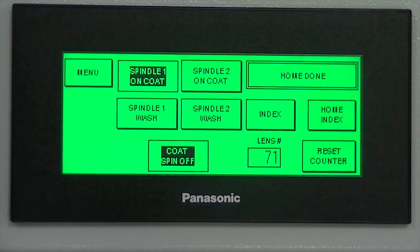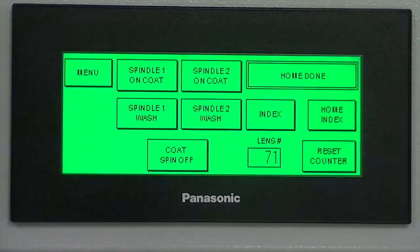Once this last speed is tested, unselect coat spin off option and then unselect spindle on option. Repeat steps for remaining spindles if needed.